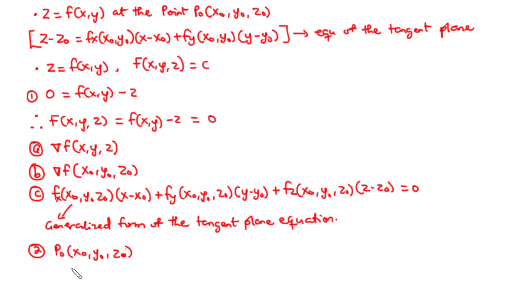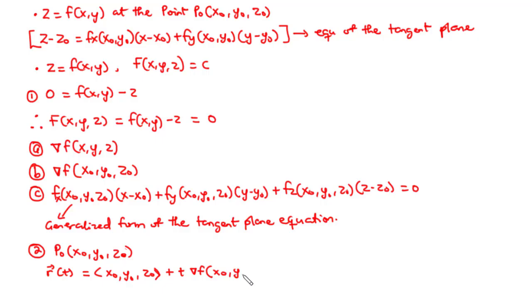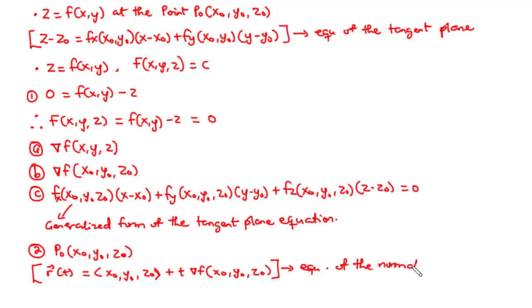Therefore, we can find the equation of the line using this formula: R of t equals the vector with components x0, y0, z0, plus t times the gradient of the function at the point x0, y0, z0. This is how to find the equation of the normal line to the surface.